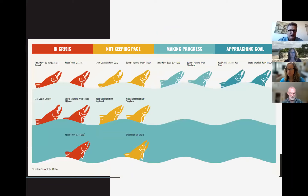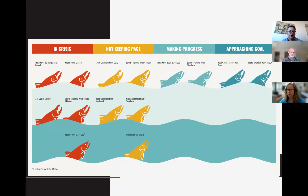This slide from the most recent State of the Salmon report shows individual salmon and steelhead stocks and their statuses — reading left to right, red is bad and turquoise blue is good. You can see there are five stocks in crisis, and a couple stocks on the right that are approaching recovery goals, meaning they're getting nearer to delisting from the Endangered Species Act.